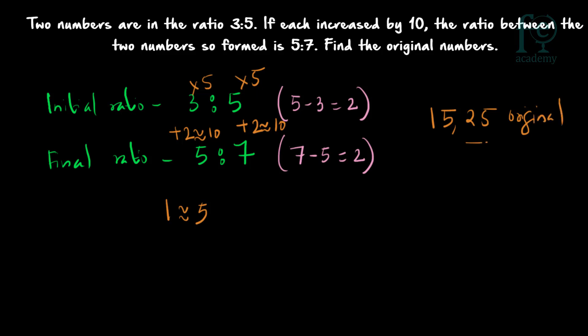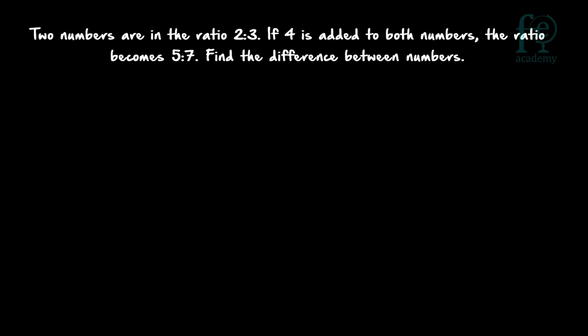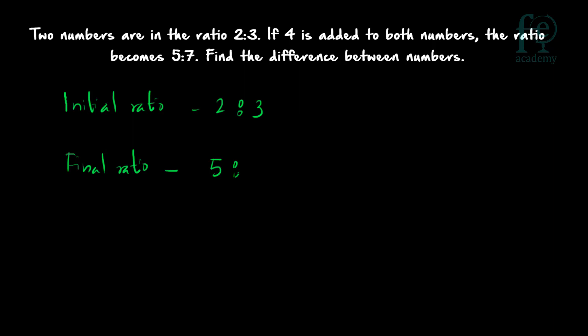Once you are thorough with this method, within seconds you will be able to find your answer. Last question: 2 numbers are in the ratio 2 is to 3. If 4 is added to both numbers, the ratio becomes 5 is to 7. Find the difference between the numbers. Only when you find the numbers will you be able to find the difference.